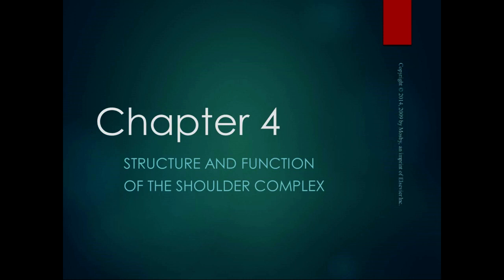We're going to talk about the individual joints, the interaction of the joints, the arthrokinematics and kinematics of the joints, osteokinematics, and four joints in the shoulder complex. It really takes interaction from all those four joints moving in their normal motion and adjusted properly in order to have normal shoulder motion. The shoulder is a pretty complex structure — you can have restriction at one joint that's causing a problem at another.